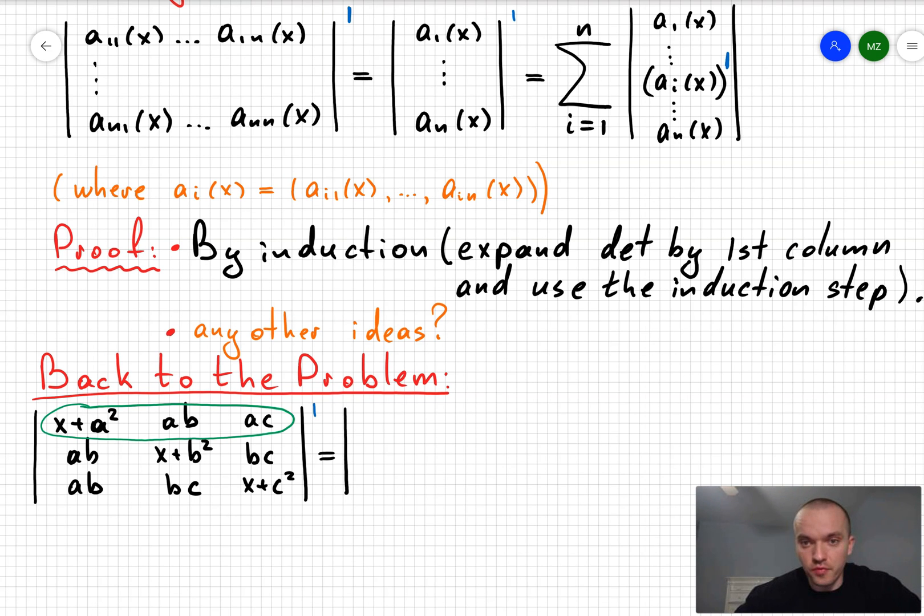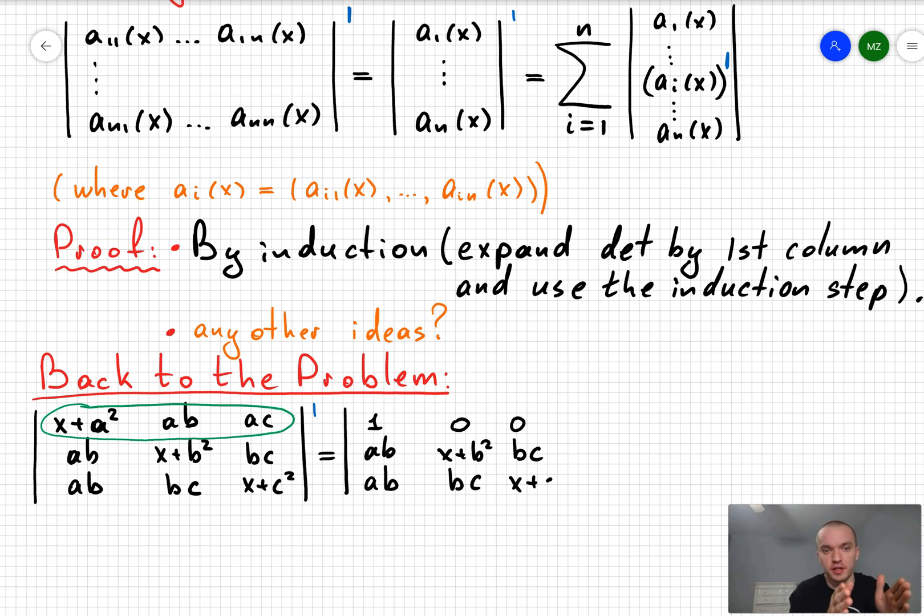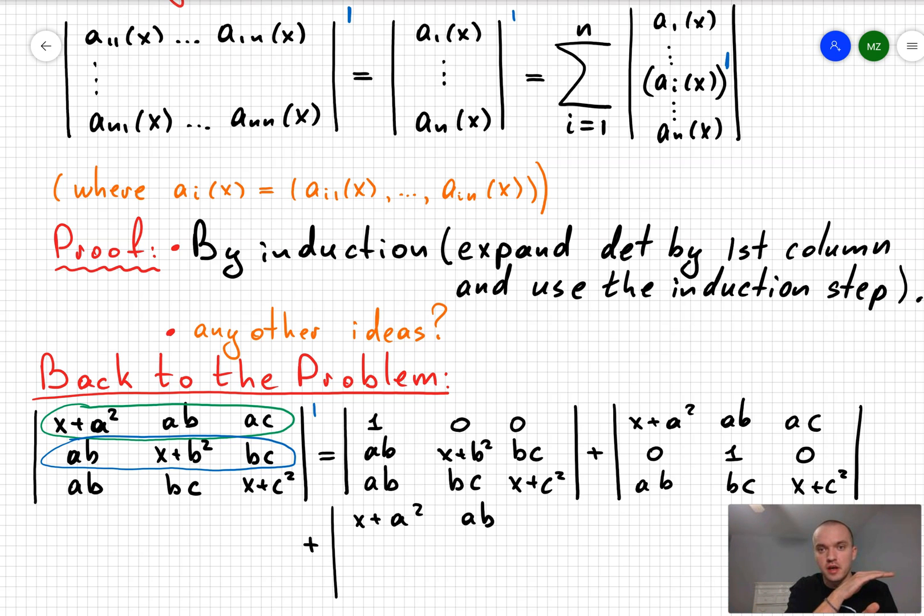What is going to be just the sum of three determinants when for the first determinant I'm going to take the derivative of the first row and derivative of x plus a squared is just one, a b and a c are constant. So that's why I'm going to get zero zero. And then I'm going to have the second determinant when I'm going to take derivative of the second row and I will have zero one zero. And the same is going to work for the last determinant when last row is going to be the derivative of the ab, bc and x plus c squared which is zero zero one correspondingly.